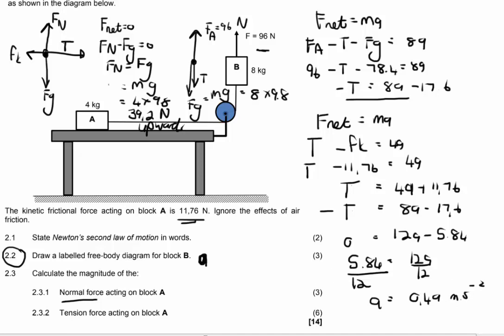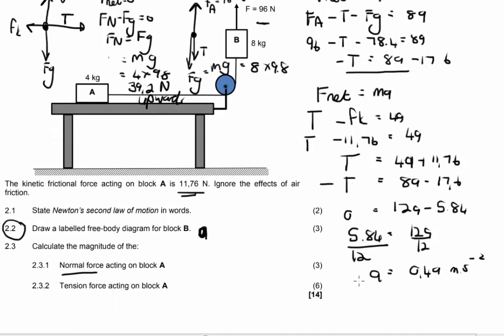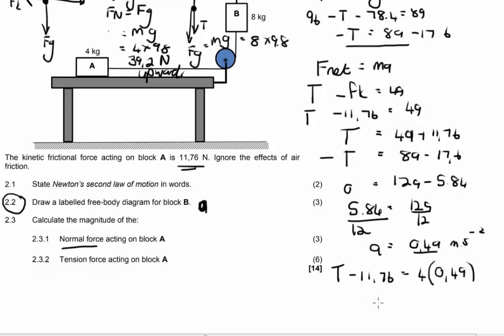We were not asked to calculate A, we were asked to calculate T, so I go and I take this answer and I substitute it into one of my formulas or my equations. I'm going to take the second one, T minus 11.76 equals 4A, and instead of A I substitute 0.49. And I now go and calculate T, it will give me 13.72 Newton as my tension force.